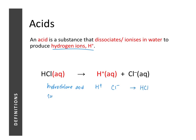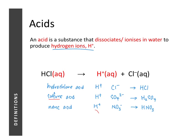Sulfuric acid contains hydrogen ions and, from the name 'sulfuric,' it suggests sulfate ions as well. Using cross multiplication with the charges on the ions gives us the formula H2SO4 for sulfuric acid. Nitric acid contains hydrogen ions and nitrate ions, so the formula for nitric acid is HNO3.